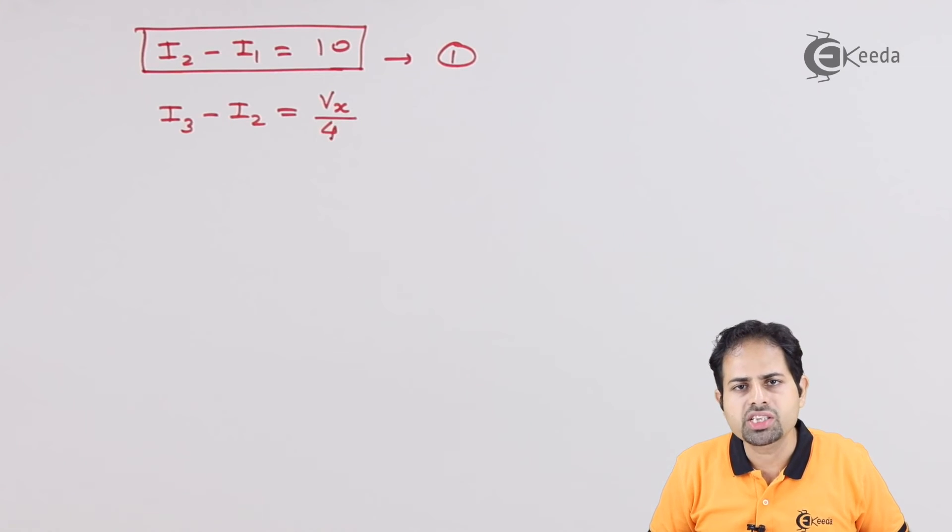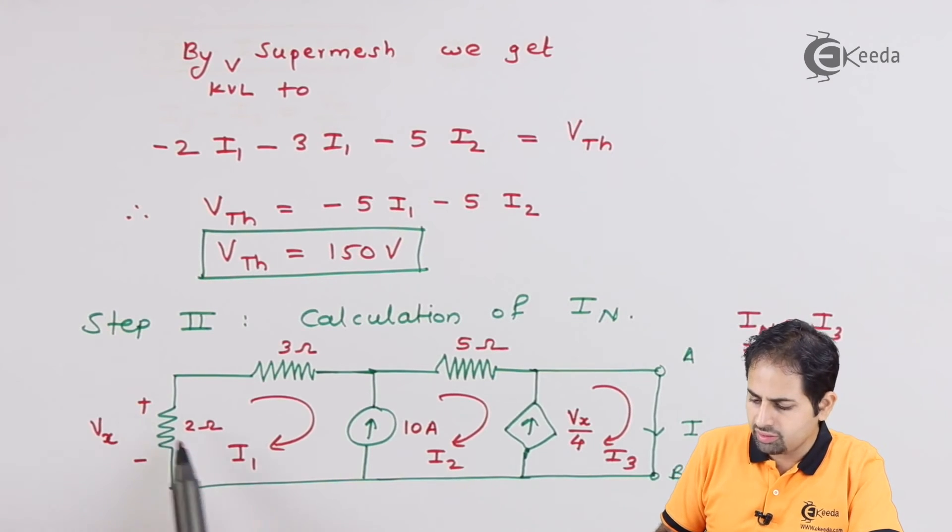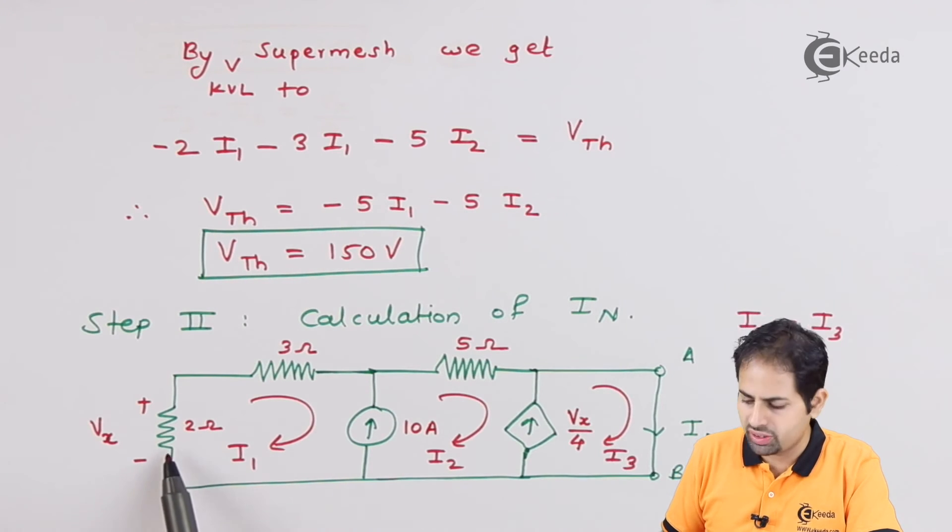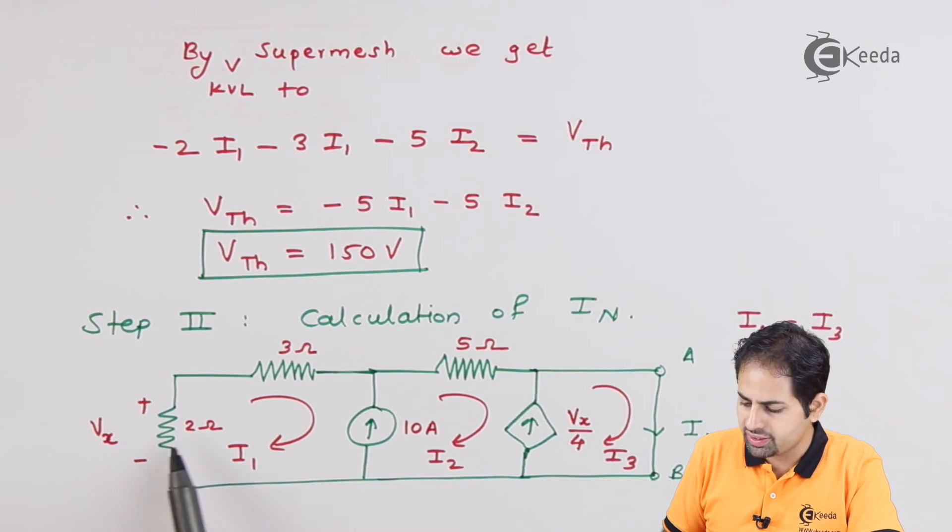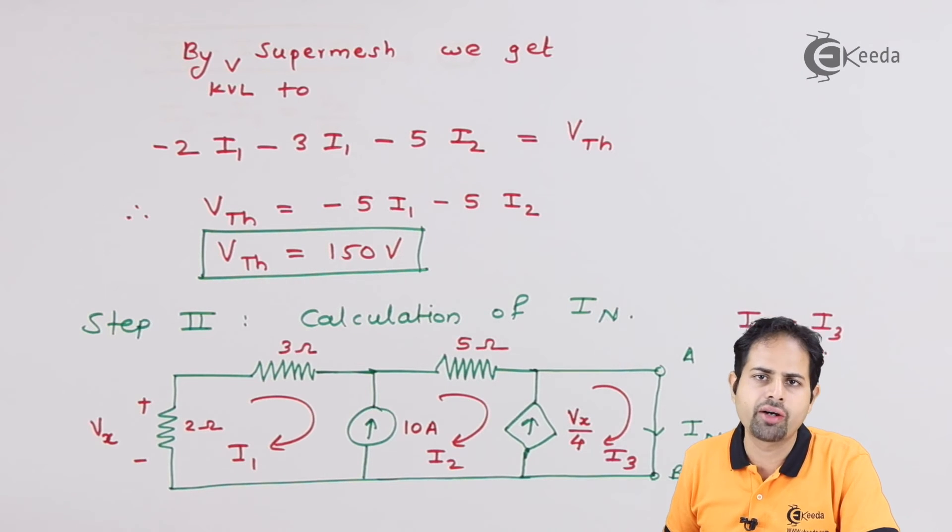Now the question comes, what is Vx? Vx is nothing but voltage across this two ohm resistor, and this current is entering into negative terminal. So Vx is minus 2 into I1, as we have written previously.